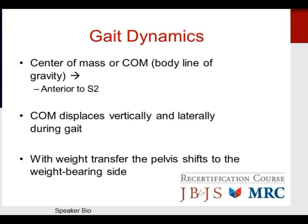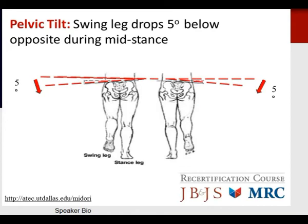In gait dynamics, the center of mass — the body line of gravity — is anterior to S2. That center of mass displaces vertically and laterally during gait. With weight transfer, the pelvis shifts to the weight-bearing side. Regarding pelvic tilt, which is a basis of gait, the swing leg drops five degrees below the opposite side during mid-stance.